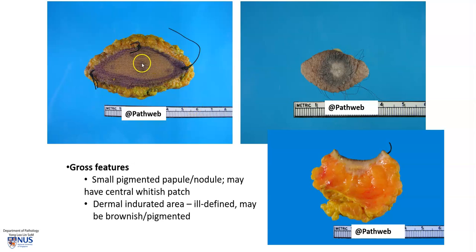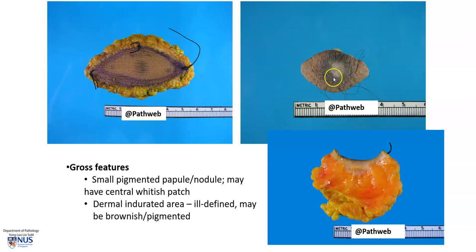Grossly, we can see this little area of pigmentation. This is another ellipse of skin that has been excised. We can see this brownish pigmentation and a pale whiter area in the center, which is also quite commonly seen in dermatofibroma. On the cut surface, we can see this relatively ill-defined but quite symmetrical dermal lesion that extends into the subcutis in this particular case.